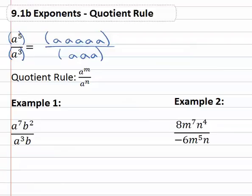Now with fractions, if everything is multiplied, we are allowed to reduce common factors. So if we divide out an a, divide out another a, and divide out another a, we see there are only two left, or a squared is what's left.